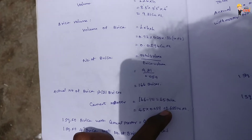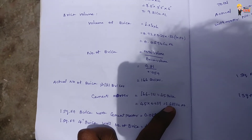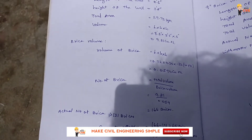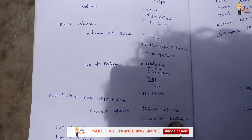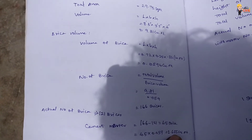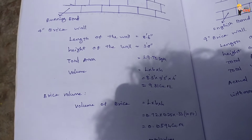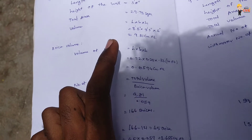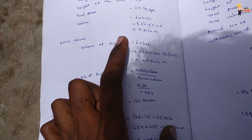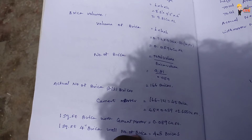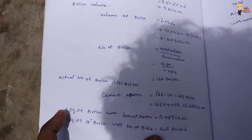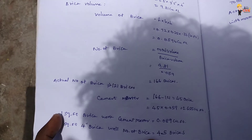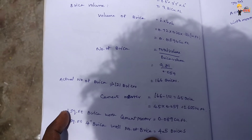The volume of bricks in cubic feet is 2.675 cubic feet. This is the total volume expressed in square feet and cubic feet for the cement mortar calculation.